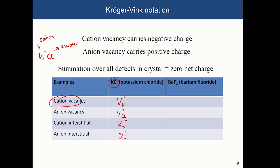For a different ionic crystal like barium fluoride, where barium carries a 2+ charge and fluorine carries a single minus charge, the notation looks slightly different. A cation vacancy for barium would be written with two primes (′′) because removing Ba²⁺ leaves two negative effective charges. An anion vacancy of fluorine carries one positive effective charge (one dot). A cation interstitial of barium carries two positive charges (two dots), and an anion interstitial of fluorine carries one negative charge.